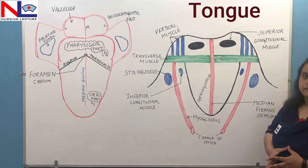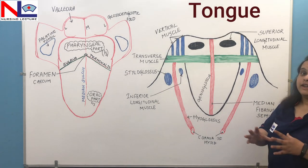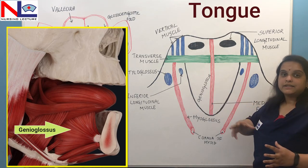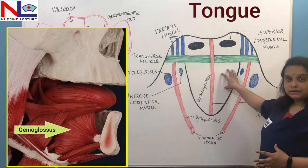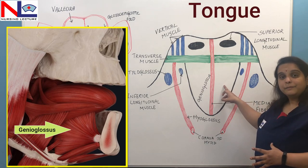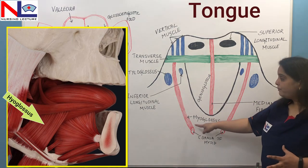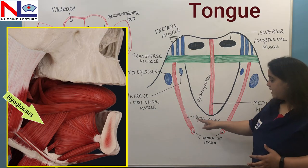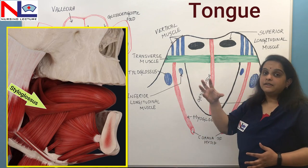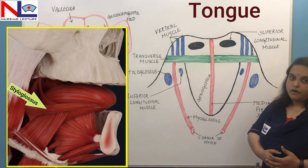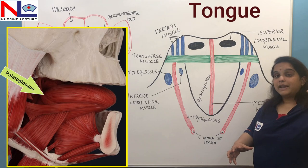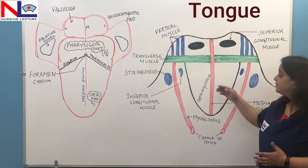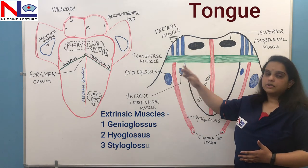The extrinsic muscle fibers originate in bone and insert in the connective tissue of the tongue. The first is genioglossus — 'genio' means mandible, 'glossus' means tongue — so it extends from the mandible and inserts in the tongue. Hyoglossus originates from the hyoid bone and inserts in the tongue. Styloglossus originates in the styloid process and inserts in the tongue. Palatoglossus originates in the palatine bones and inserts in the tongue. So these are the four pairs of extrinsic muscles: genioglossus, hyoglossus, styloglossus, and palatoglossus.